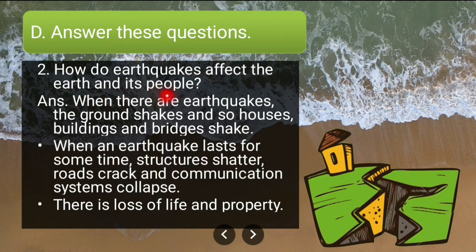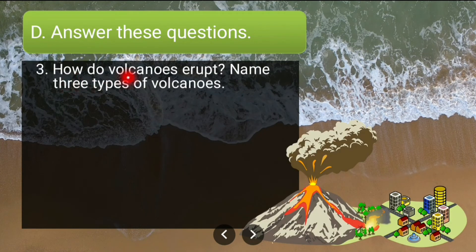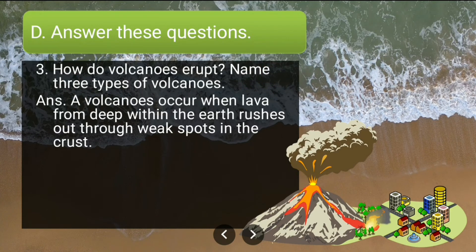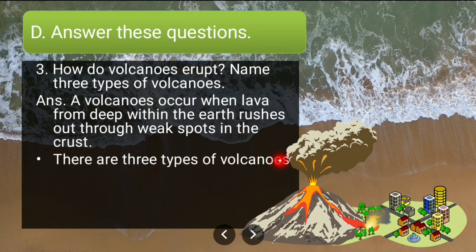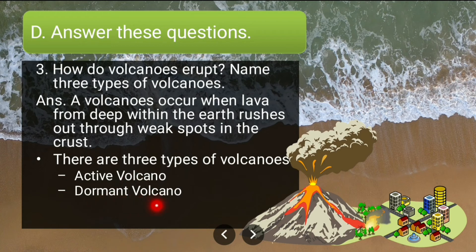Third long answer: how do volcanoes erupt and name three types of volcanoes. A volcano occurs when lava from deep within the earth rushes out through weak spots in the crust. There are three types of volcanoes: active volcano, dormant volcano, and extinct volcano.